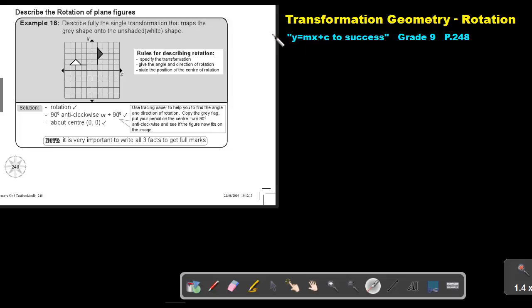Part 15. We are going to continue with transformation geometry and we are still going to focus on rotation. You will find this on page 248 in the Namibia Mathematics Grade 9 textbook, Y equals MX plus C to success.